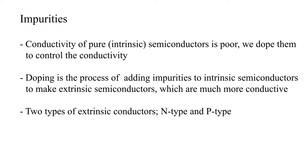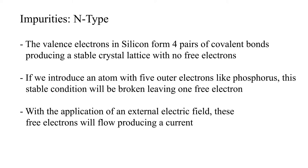The first type we will discuss are n-type semiconductors. There are four electrons in the outer shell of a silicon atom. These outer electrons form four pairs of covalent bonds to adjacent silicon atoms. This produces a crystal lattice in quite a stable condition and with no free electrons to produce a current.